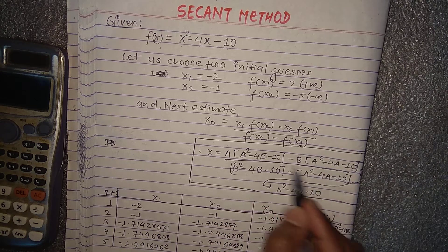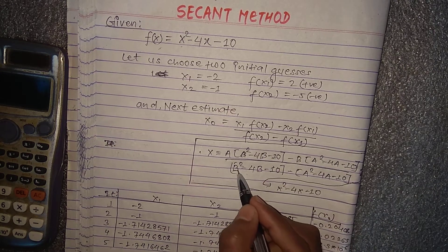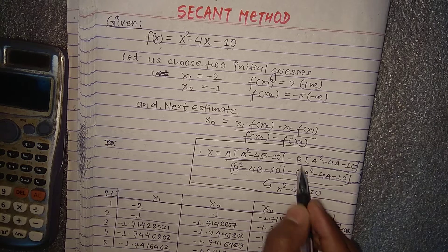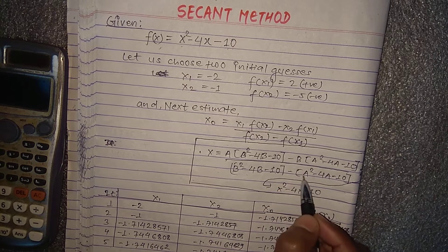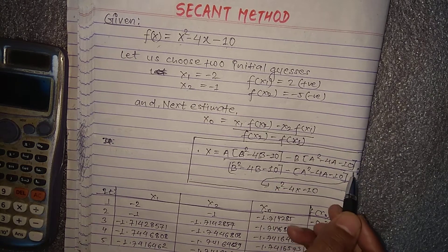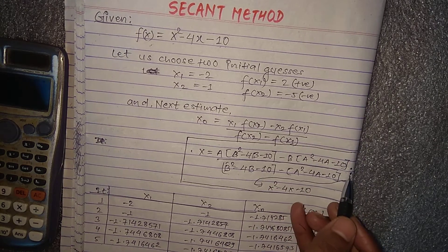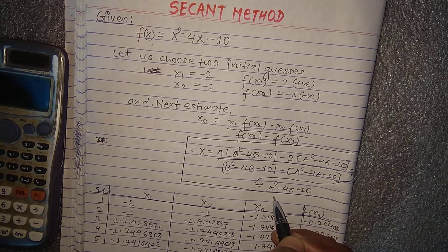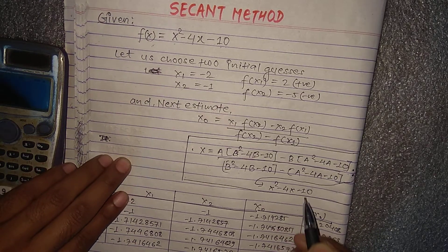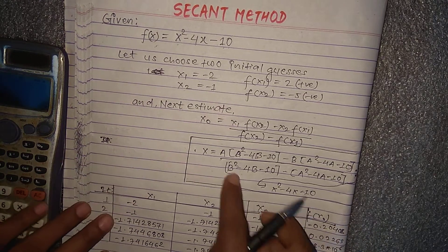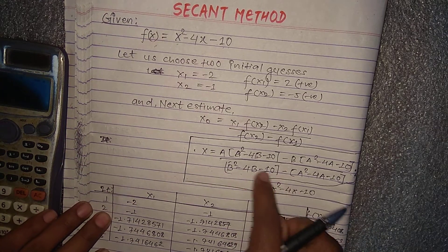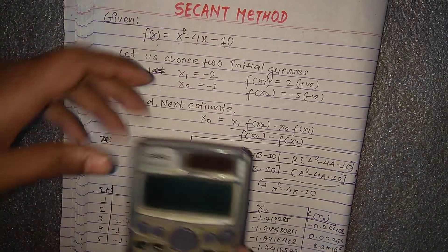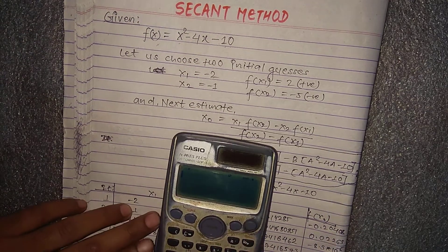The denominator is f(x2) minus f(x1), which is (b² - 4b - 10) minus (a² - 4a - 10). We can put this full expression into the calculator with the function f(x) = x² - 4x - 10.